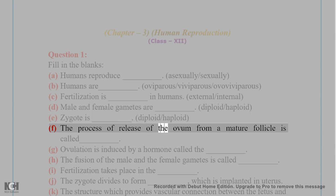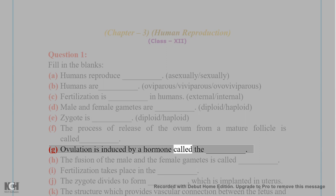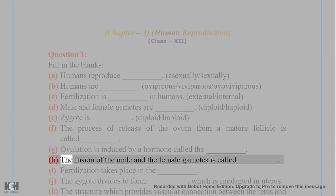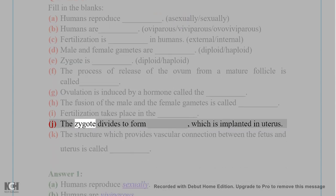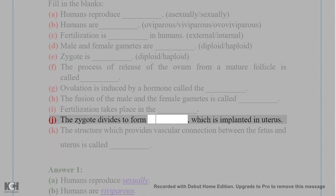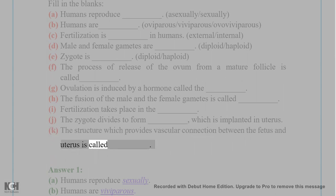F. The process of release of the ovum from a mature follicle is called _____. G. Ovulation is induced by a hormone called _____. H. The fusion of the male and the female _____. I. Fertile. J. The zygote divides to form _____. K. The structure which provides vascular connection between the fetus and uterus is called _____.